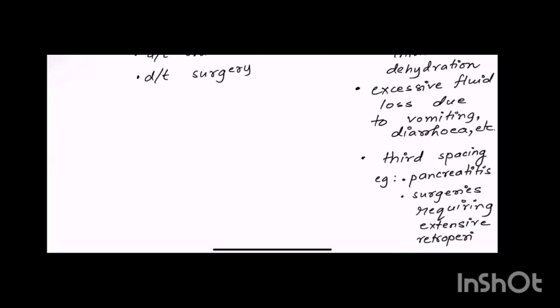It can also be due to third spacing, for example conditions like pancreatic surgeries which require extensive retroperitoneal dissection. So hemorrhagic shock is trauma and surgery, and non-hemorrhagic shock is due to vomiting, diarrhea, or third spacing surgeries.